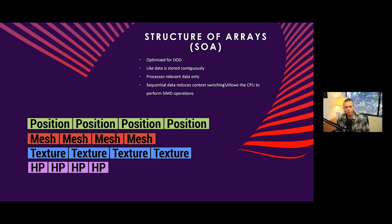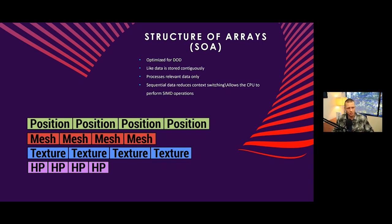This goes a bit more in depth than I want to cover here, but basically just think of it as: if we're performing the same instruction set on similar data, we can group that all together and the computer can process that small block of data all at once. Single Instruction, Multiple Data — that's where a lot of the efficiency from the burst compiler comes from.